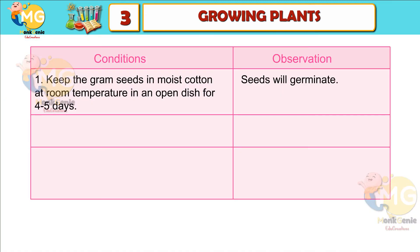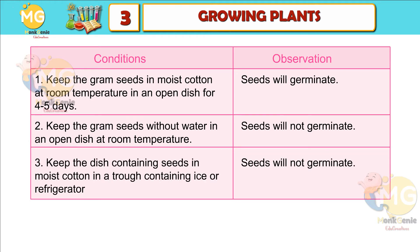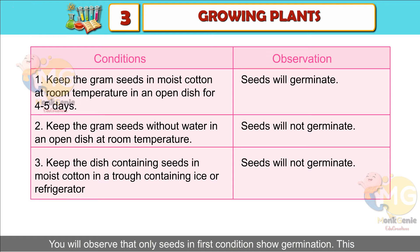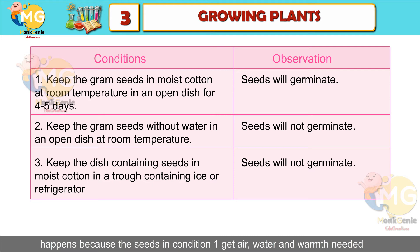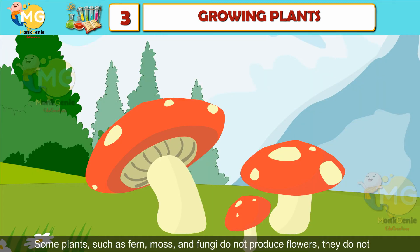Conditions required for germination: keep gram seeds in moist cotton at room temperature in an open dish for four to five days — the seeds will germinate. Keep gram seeds without water in an open dish at room temperature — seeds will not germinate. Keep seeds in moist cotton in a trough containing ice or a refrigerator — seeds will not germinate. Only seeds in the first condition show germination because they get air, water, and warmth needed for germination.